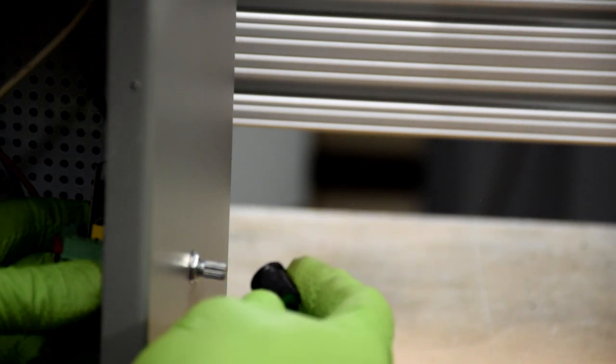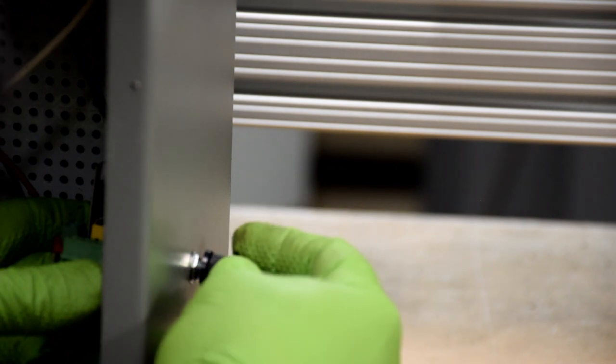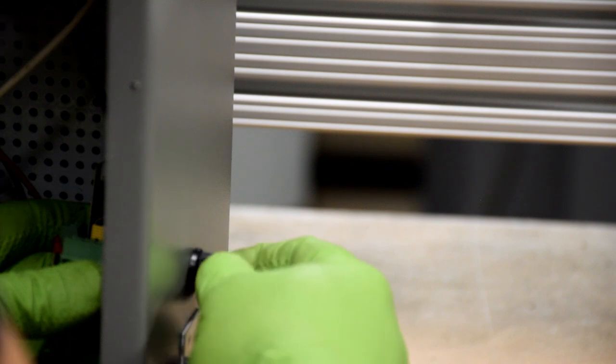Once that's secure, you're going to want to put the knob back on. It doesn't go on in any particular way, there's no register or anything, so what I do is turn it all the way to one side, put it on, see where the mark lines up, and get it in a spot that I like.